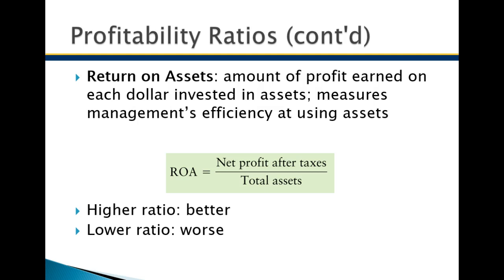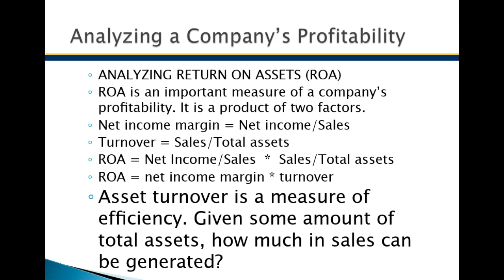When we last left off, we were talking about return on assets. I described how to calculate it and its significance, but I want to talk more about analyzing return on assets. It's a critical measure of profitability and it's a product of two factors: the net income margin, which is net income divided by sales, and the turnover, which is sales divided by total assets. Turnover shows the number of times sales is of assets — if assets are $100,000 and sales are $1 million, you have 10 turns.